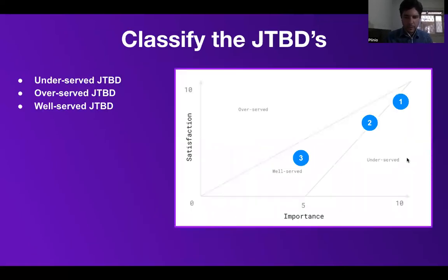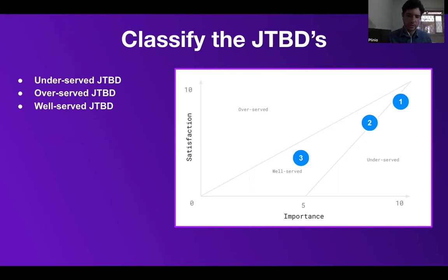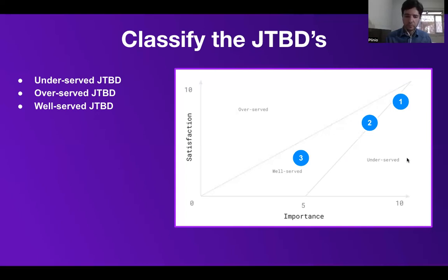The next step after working with Jobs to be Done is classifying the insights in order of satisfaction and importance. We have underserved jobs to be done — jobs that customers are unsatisfied with current solutions, but the job is important. As a result, we could make the existing solution better. We also have overserved jobs to be done where customers are satisfied with current solutions, but the job is unimportant — so we could reinvent the solution so that more people have access to it. And we have well-served jobs to be done where customers are satisfied with the current solutions and the job is important, so we could shift the focus to providing solutions for related jobs.